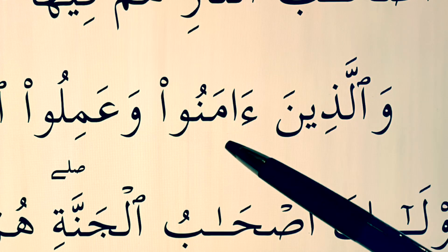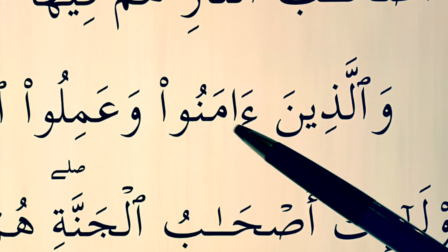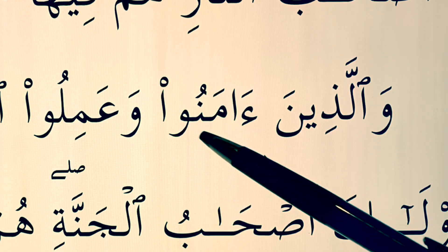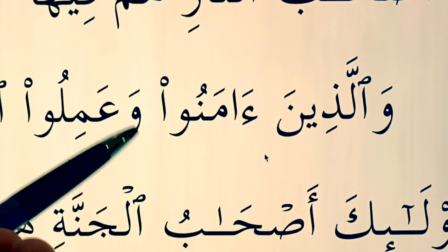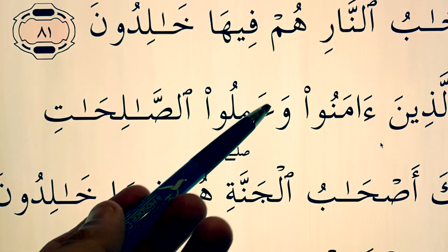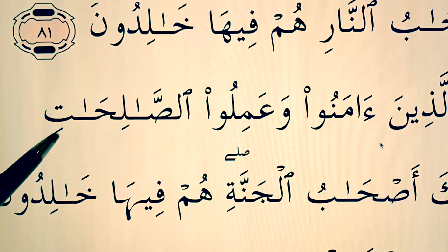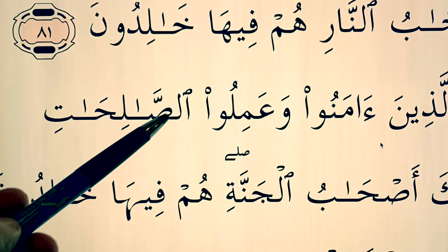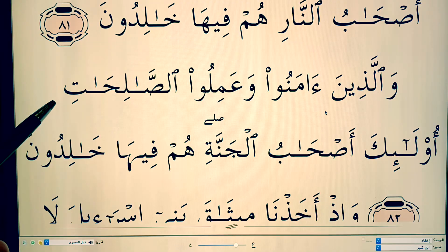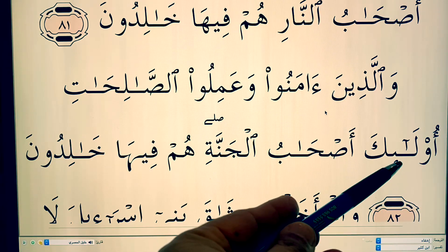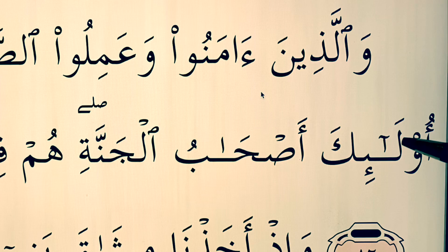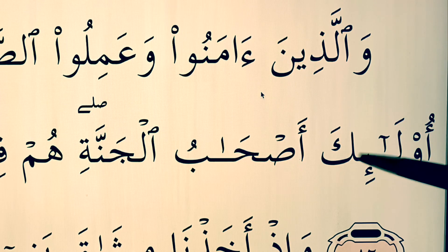والذين — then we have a hamzat alif. وَالَّذِينَ آمَنُوا وَعَمِلُوا الصَّالِحَاتِ — from here we go عَمِلُوا الصَّالِحَاتِ like that. Then أُولَئِكَ — this is a showing mad, you extend this lam: أُولَئِكَ.